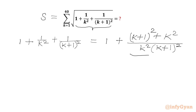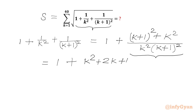Now we will simplify this part. We will use the (a+b)² identity: k squared plus 2k plus 1, plus we have the k squared term. In the denominator we will write k squared times (k+1), and then we will write power 2.